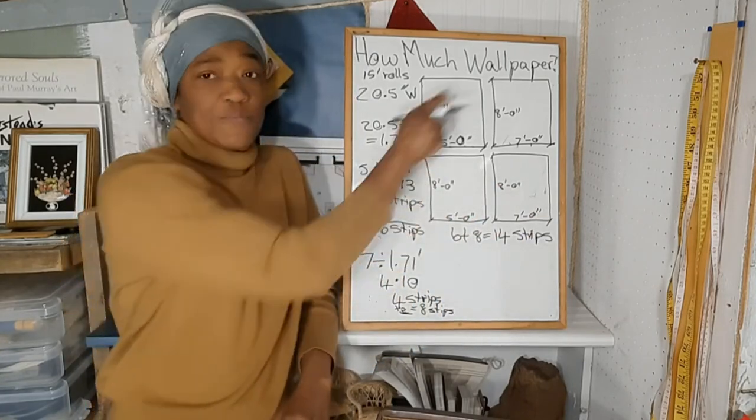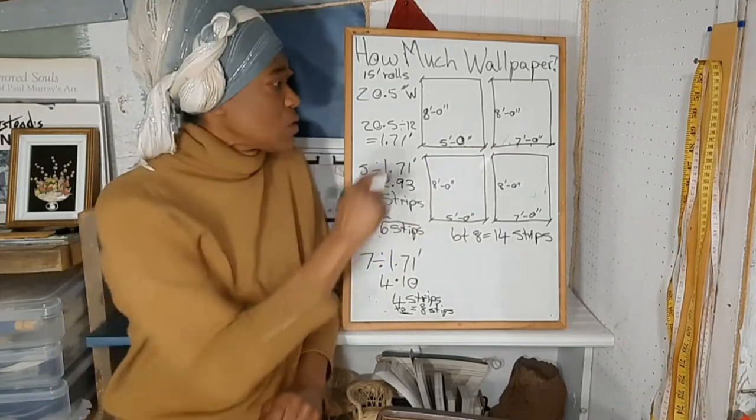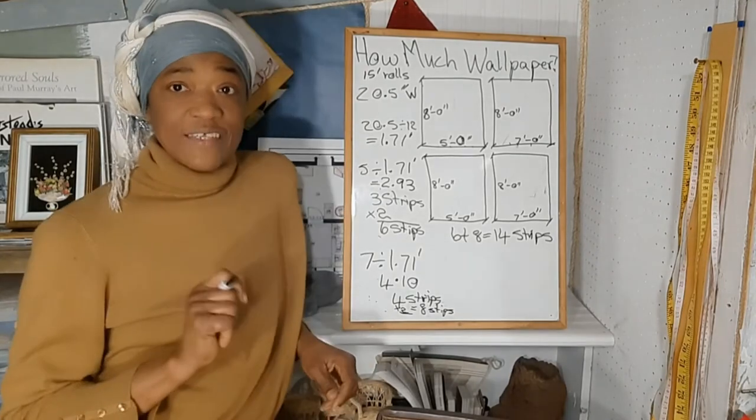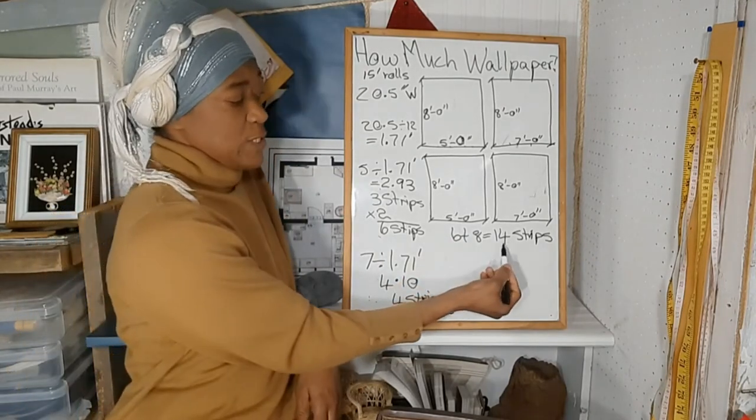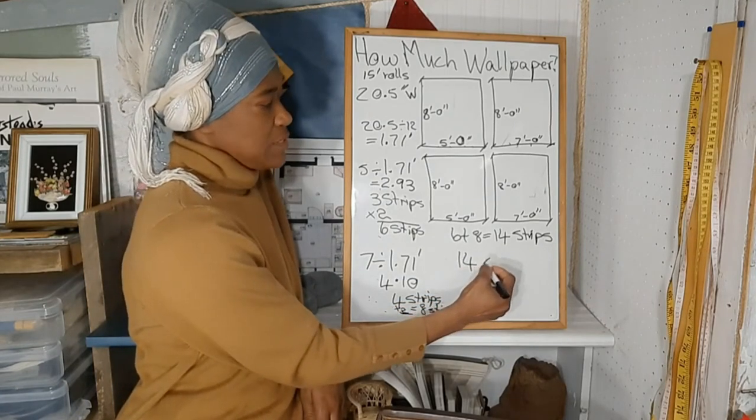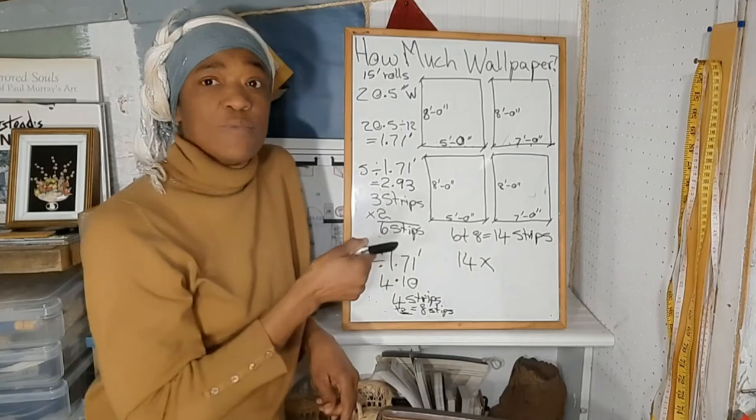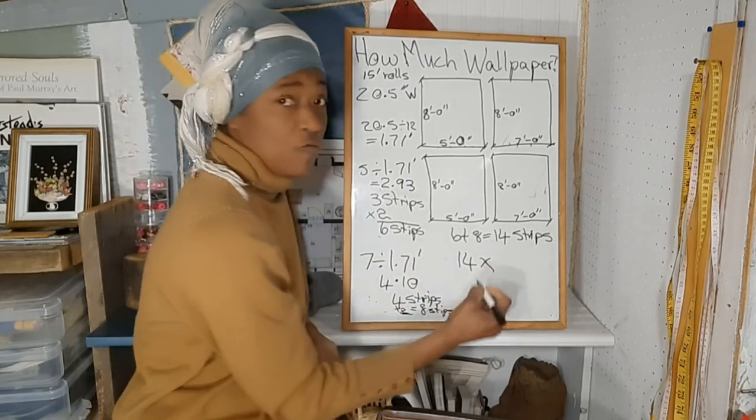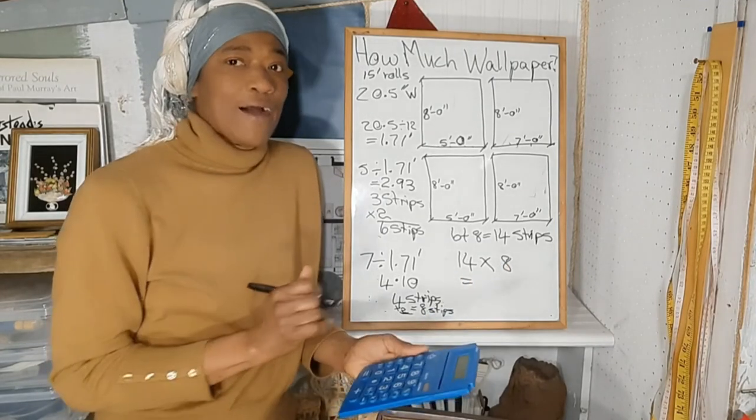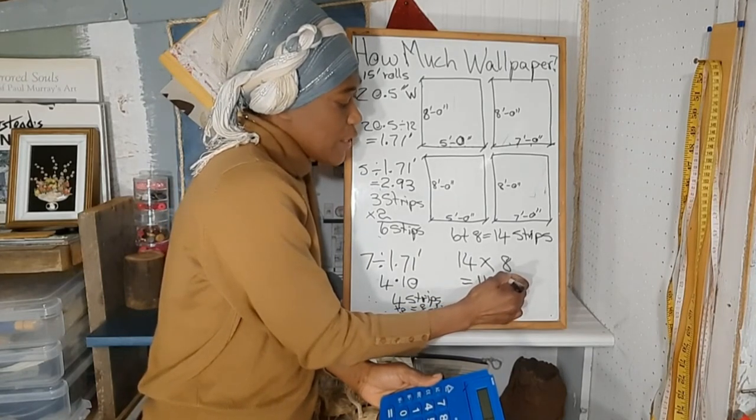We need 14 strips of wallpaper to go around the entire room. So what about the height? What do we do next? We take the 14 strips and we multiply that by 8 feet, because the room is 8 feet high. So 14 multiplied by 8 equals 112. So we need 112 feet of wallpaper.